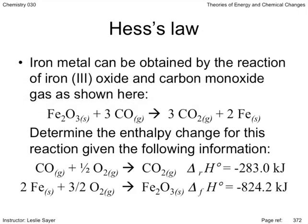Let's apply this to an example. Iron metal can be obtained by the reaction of iron-3-oxide and carbon monoxide gas, as shown here. Determine the enthalpy change for this reaction given the following information.